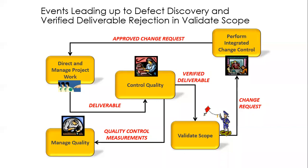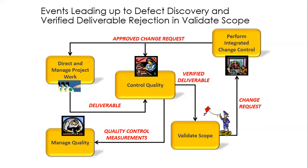At the end of all this, don't forget the feedback loop continues. Approved change requests will go back into control quality for the next go round. That takes us to the final scenario — events leading up to deliverable discovery, deliverable acceptance, and transition to the customer.